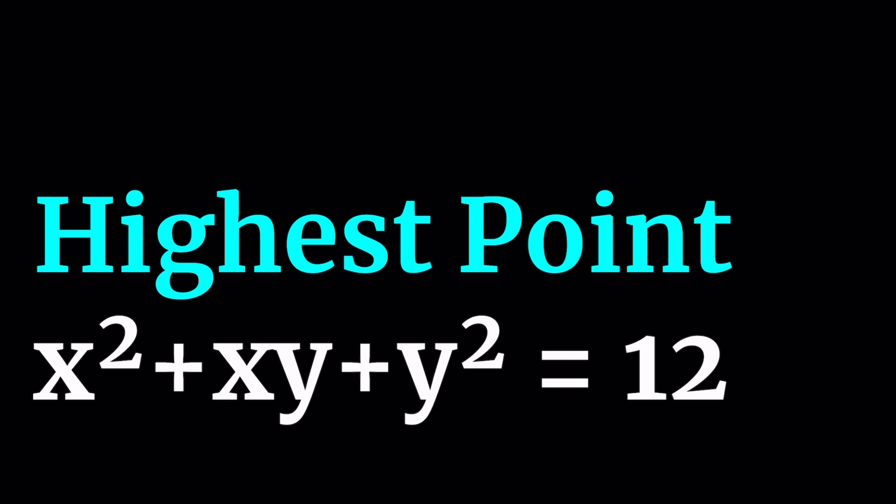Alright, so to find the highest point we're going to be using calculus. Don't be scared because calculus basically means that we're going to look at the rate of change of a function. We're going to evaluate at which point this function has a horizontal tangent because that indicates usually the lowest point or the highest point. How do we decide? There's a way to do it as well which we can talk about, but you can tell when I show you the method.